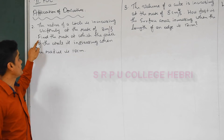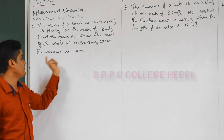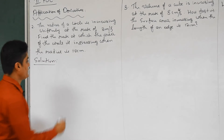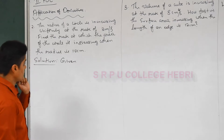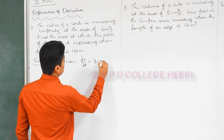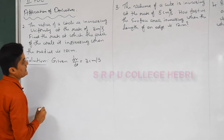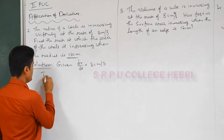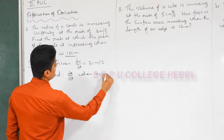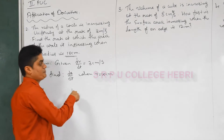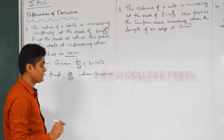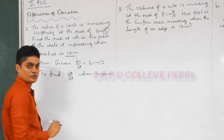Second question: the radius of a circle is increasing uniformly at the rate of 3 cm per second. Find the rate at which the area of the circle is increasing when the radius is 10 cm. Given: dr/dt = 3 cm/s. To find: dA/dt when r = 10 cm. Note the difference from the previous problem — here we differentiate with respect to time, not with respect to radius.